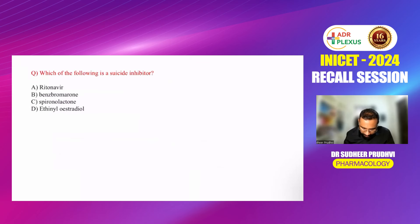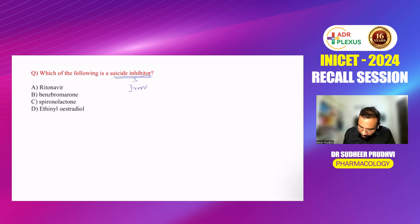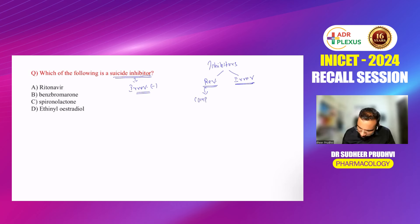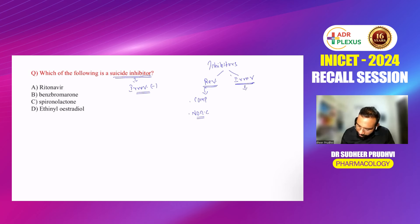The third question asks: which of the following is a suicide inhibitor? Suicide inhibitors are also known as irreversible inhibitors. Classically, inhibitors are divided into reversible inhibitors (competitive and non-competitive) and irreversible inhibitors. Irreversible inhibitors bind irreversibly with the help of covalent bonds, permanently inhibiting the enzyme — that is why we call them suicide inhibitors.